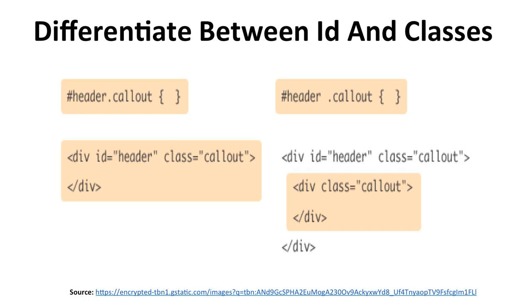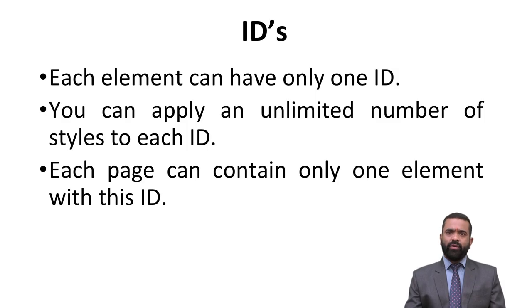Here is an example combining id and class: 'header.callout' with a hash selector, and a div with id equals 'header' and class equals 'callout'. Regarding IDs: each element can have only one ID, and you can apply an unlimited number of styles to each ID.